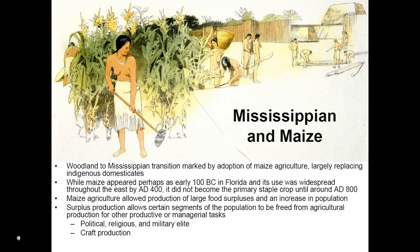While maize was introduced perhaps as early as 100 BC, it did not become widespread throughout the eastern United States until about AD 400, and even then it did not become the primary staple crop until around AD 800. So it takes several hundred years before the cultivation of maize is fully adopted and becomes the dominant means of producing food.